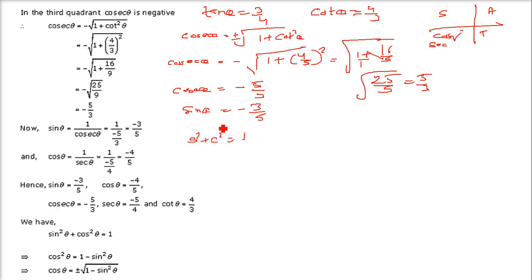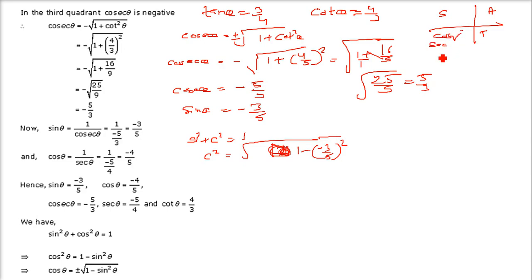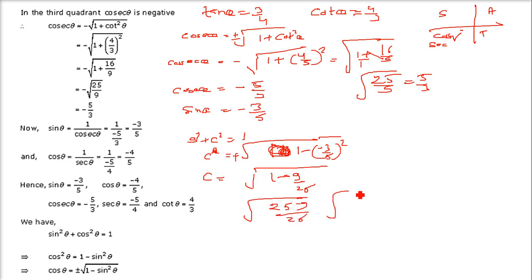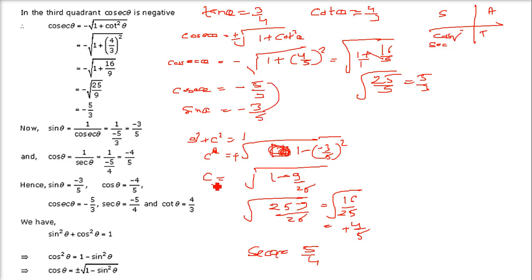Using sin²θ + cos²θ = 1: cos θ = √(1 - sin²θ). Since cos is positive in the third quadrant here (only cos and sec are positive), cos θ = √(1 - 9/25) = √(16/25) = 4/5. So sec θ = 5/4. We now have all six values: tan, cot, sin, cosec, cos, and sec.